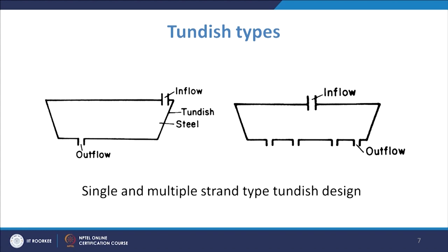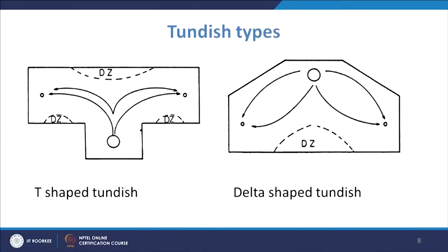For the requirement of a larger number of strands and more metal teeming out, and also to increase quality, we go for different designs of tundish. Another tundish design which is popular is known as the T-shape tundish — this shape is in the form of a T. These tundishes can be studied from the plan view — the metal comes in and then has to move in a certain fashion towards the outlets.